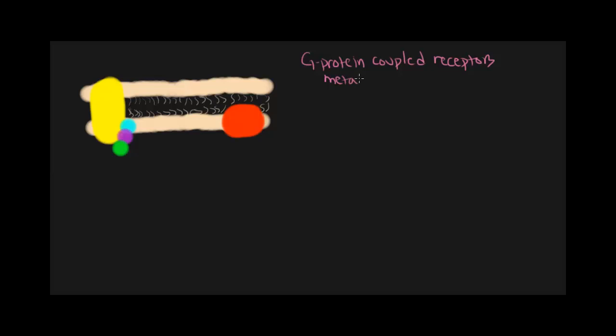This results in a cascade of intracellular effects caused by affecting signal pathways in the cell. Let's look at what the G-protein-coupled receptor is composed of.